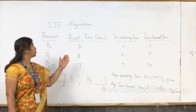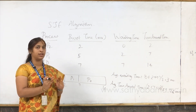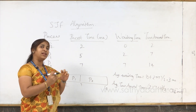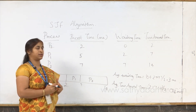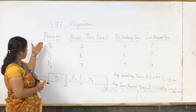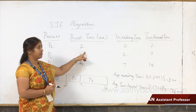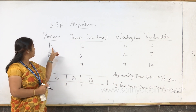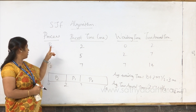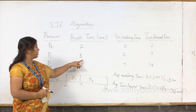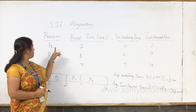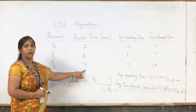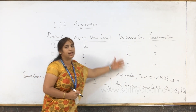The second algorithm is shortest job first. According to this algorithm, whichever process has the least burst time will get the CPU first. So P2, having the least burst time of 2 milliseconds, gets the CPU first. After P2 completes, P1 has the next least burst time, so P1 gets the CPU next. Finally, P3 gets the CPU. Accordingly, the waiting times will change.